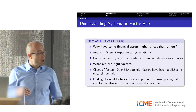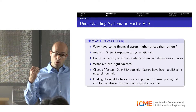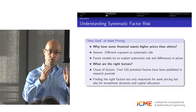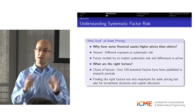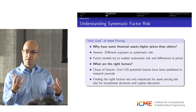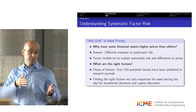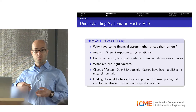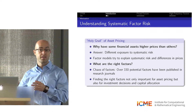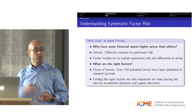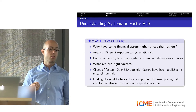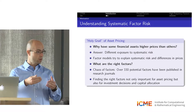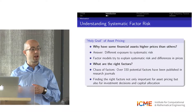One of the most important questions in finance is to understand why certain assets have a different price than other assets. The idea is that different assets have different exposure to risk. If you have more risk, you earn a higher risk premium, and that's why you have a different price. This risk can be modeled in a very general way using factors. If you are exposed to more factor risk, you should have a higher risk premium.